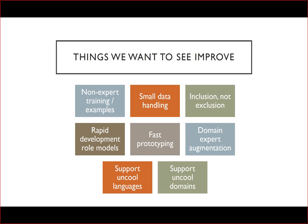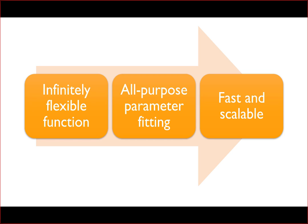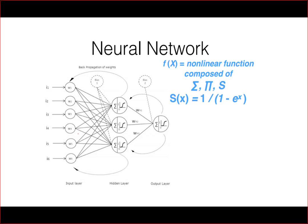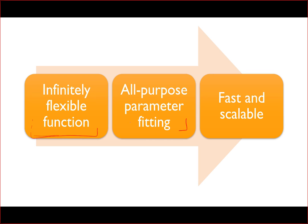We're excited because we now have the three pieces of this universal learning machine. The first is an infinitely flexible function — that's the neural network. The second is all-purpose, parameter-fitting that is fast and scalable — that's gradient descent and backpropagation. The third piece, which has been missing until very recently, is being able to do this in a way that actually works with the amount of data and time you have available.